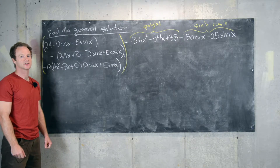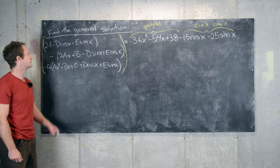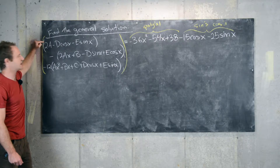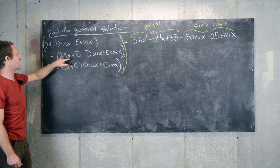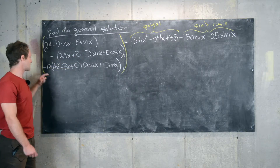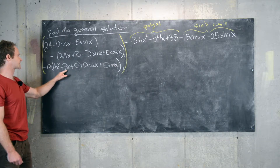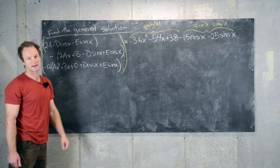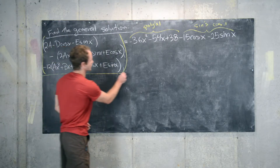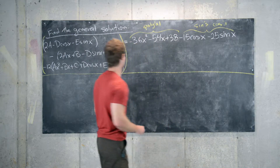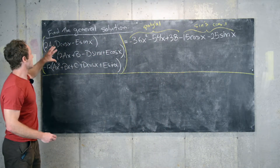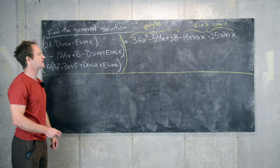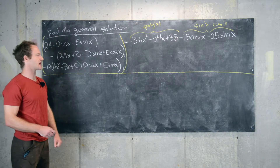Plugging the guess into the differential equation, we have y_p double prime — which is 2a minus d cosine x minus e sine x — minus y_p prime — 2ax plus b minus d sine x plus e cosine x — minus 12 times y_p, which is ax squared plus bx plus c plus d cosine x plus e sine x, all equal to the right-hand side. Our strategy is to equate all coefficients of x squared, x, the constant, and the sine and cosine terms on both sides, giving us a system of equations.